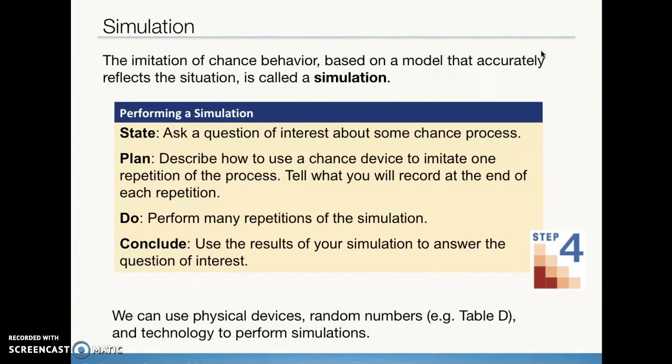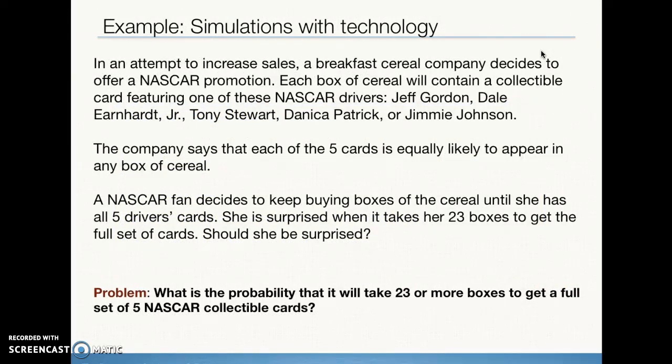So we have a lot of different choices for simulation. It could be flipping a coin, rolling a die, the calculator, or our random digit table. We have an example in our textbook that talks about a promotion that a breakfast cereal company runs where they have collectible cards for five different NASCAR drivers that they're putting in their boxes of cereal.